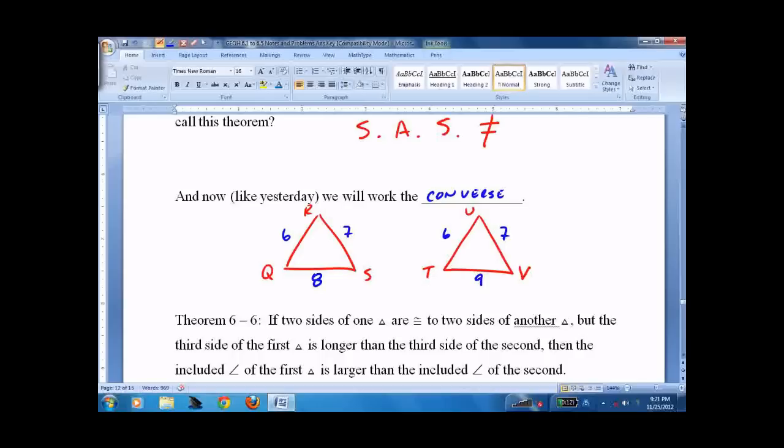What's going to be bigger? Hopefully you notice, measure of angle R is going to be smaller, measure of angle U bigger. 9 is bigger than 8. Therefore, the angle across from it is going to be bigger. That's the whole lesson.